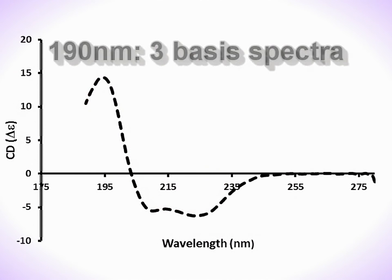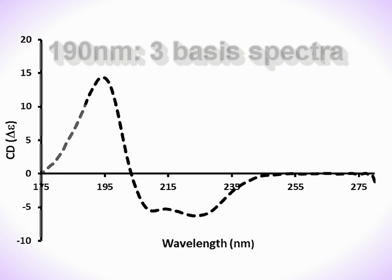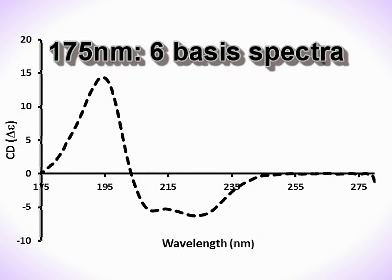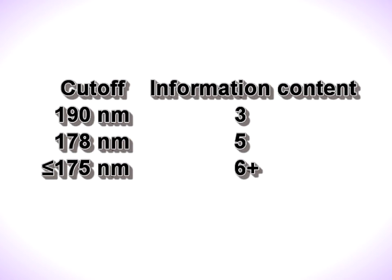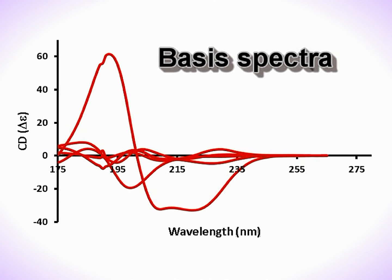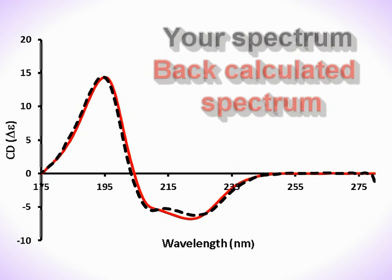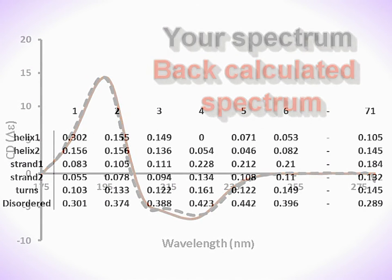Data that reaches 190 nanometers gives rise to three basis spectra, and this increases to five or six when the data is extended to 175 nanometers. So lower wavelength data contains more information and gives better predictions. The algorithm iterates through linear combinations of the basis curves until they converge on a curve that best fits your spectrum.